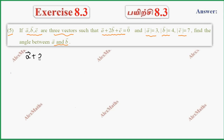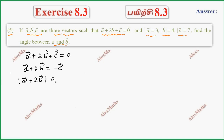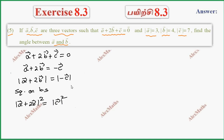So a plus 2b plus c equals 0. Moving c to the other side, we get a plus 2b equals minus c. Taking mod on both sides: mod of (a plus 2b) equals mod of minus c. Squaring on both sides: (a vector plus 2b vector) whole square equals mod of c vector squared.